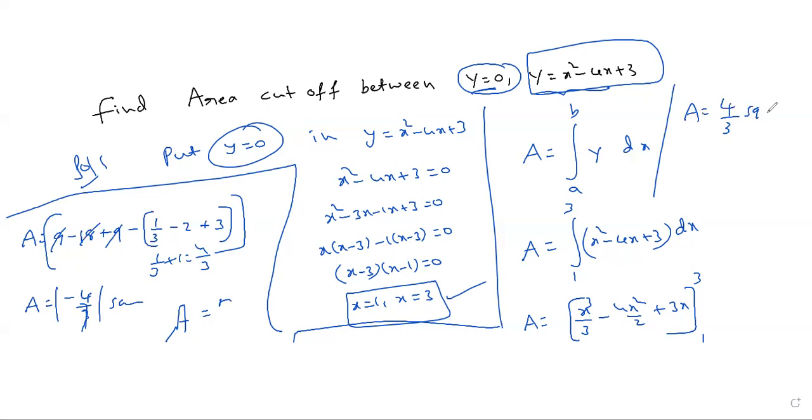So what is area here? 4 by 3 square unit. Negative answer, area should not be negative, put modulus. Take mod. Okay? Minus of something, then this is a mod. Okay? So area for this answer, 4 by 3 square unit. Okay? Alright, done. Thank you.